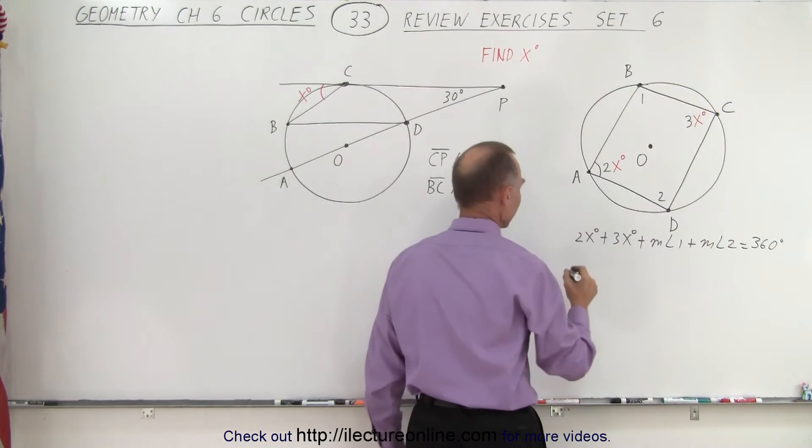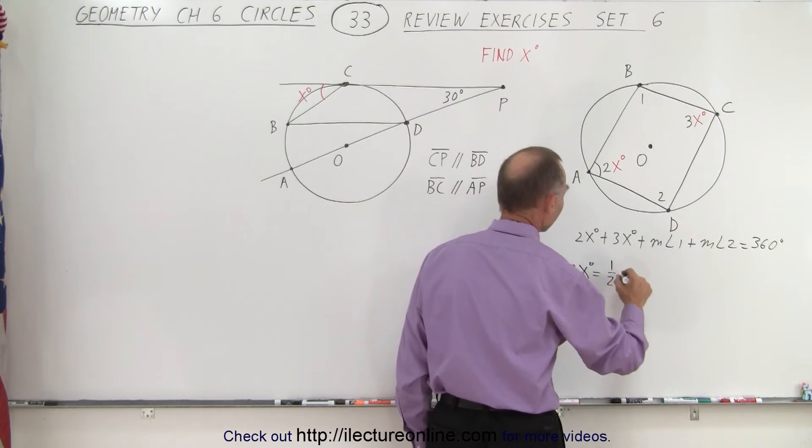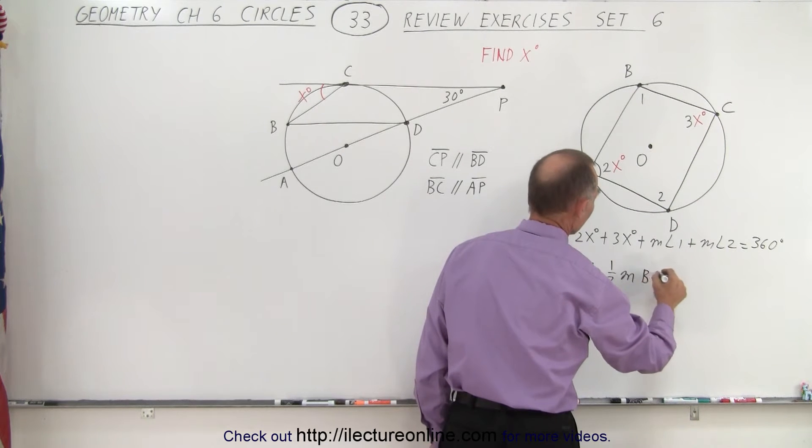So what we can say is we could say that the measure of angle 2x or simply 2x degrees must equal one half the measure of the arc length from B to C to D.